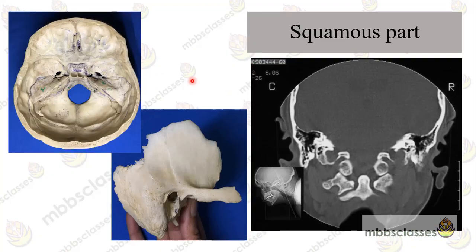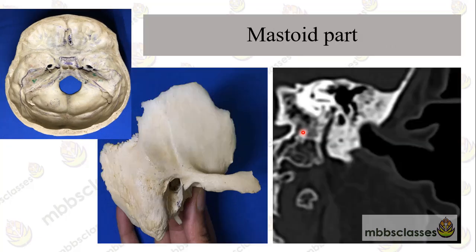Comparing the anatomy with imaging: this is the squamous part of the temporal bone seen in the coronal section of the CT. This is the mastoid part of the temporal bone in the coronal section, and this is the area which denotes the passage of the facial nerve vertical segment.